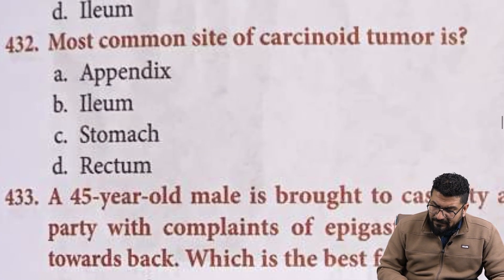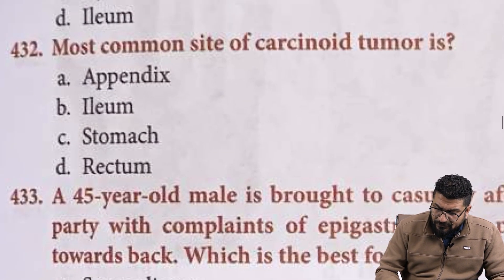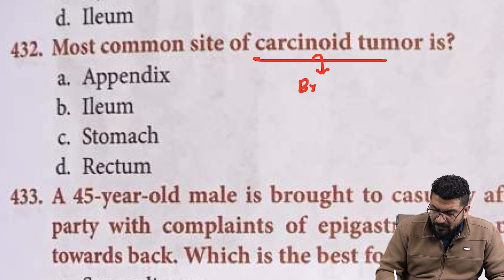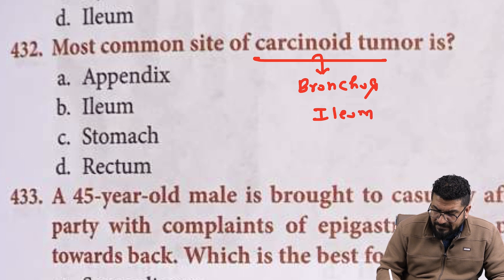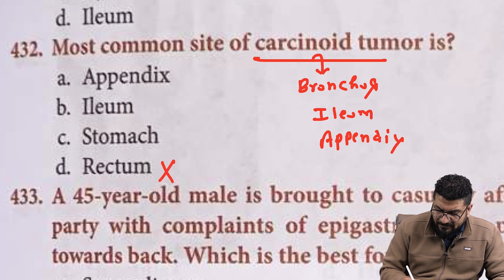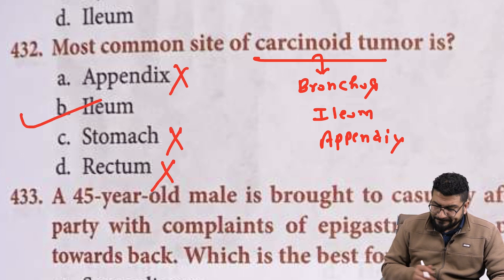Most common site of carcinoids: the answer will be bronchus; however, bronchus is not given in the options. So the second most common site will be ileum, and the third most common site will be appendix. Looking at the options — rectum: no; stomach: no; appendix: no — the answer will be ileum.